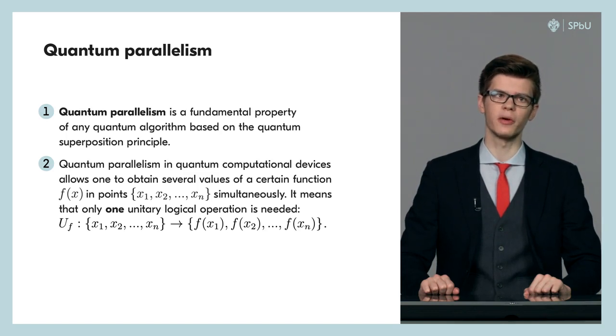Quantum parallelism allows a quantum computer to calculate the value of a certain function f at many points at once. For a set of argument values x1, x2, xn, we will obtain a set of function f values in these points: f(x1), f(x2), and so on, f(xn), as a result of only one unitary transform U.